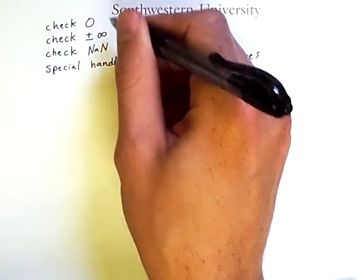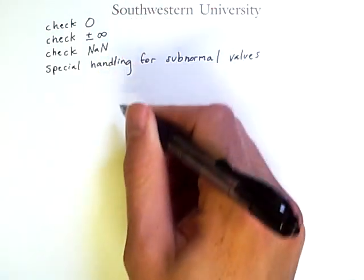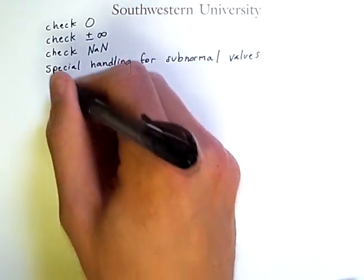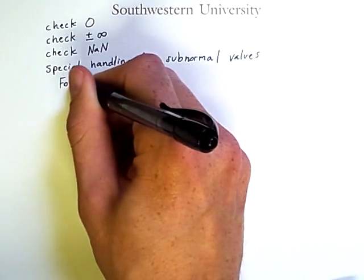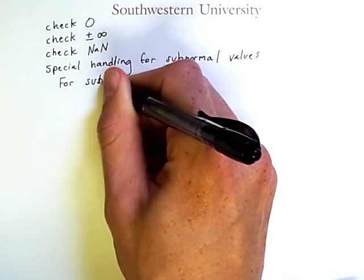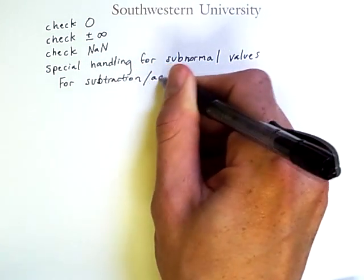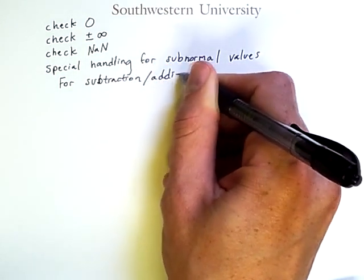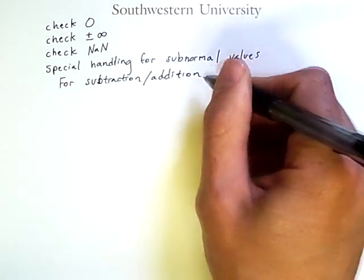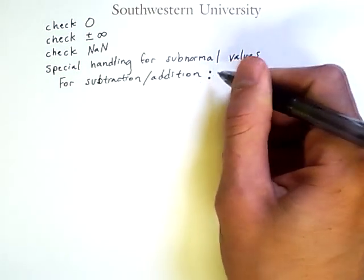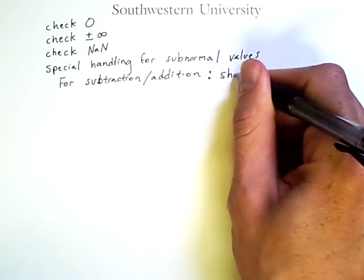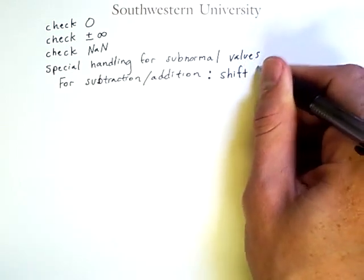These are checks that occur at the beginning of any computation. For subtraction and addition specifically, we need to align or shift the numbers, or rather one of the numbers, so that we can do that kind of operation.